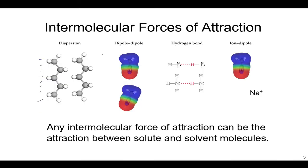Dipole-dipole forces are not fleeting like dispersion, but something permanent. Here's acetonitrile: there's carbon on one end and nitrogen on the other. Nitrogen is more electronegative, so there is always more negative charge on the nitrogen side of the molecule. This is a permanent separation of charge — still an attraction between negative and positive, but not fleeting.